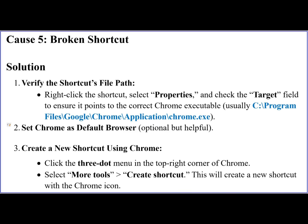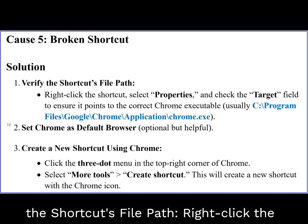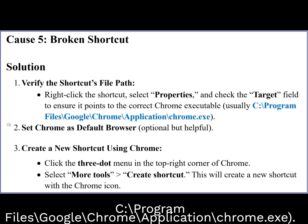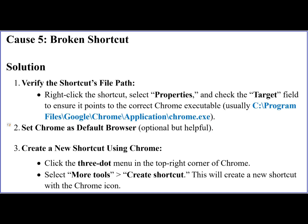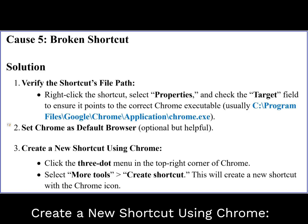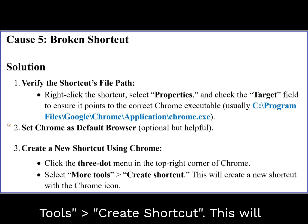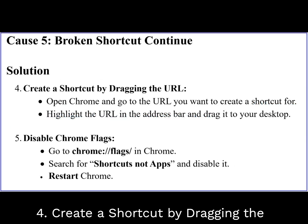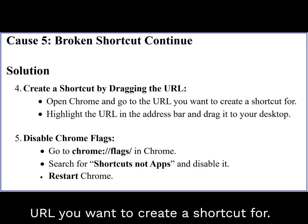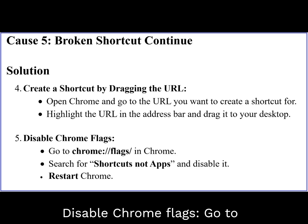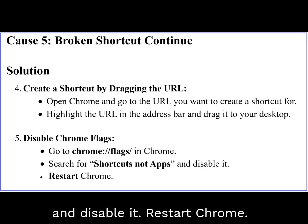Cause 5: Broken shortcut. Solution 1: Verify the shortcut's file path — right-click the shortcut, select Properties, and check the Target field to ensure it points to the correct Chrome executable, usually C:\Program Files\Google\Chrome\Application\chrome.exe. 2. Set Chrome as default browser (optional but helpful). 3. Create a new shortcut using Chrome: click the three-dot menu in the top-right corner of Chrome, select More Tools, then Create Shortcut — this will create a new shortcut with the Chrome icon. 4. Create a shortcut by dragging the URL: open Chrome, go to the URL you want, highlight it in the address bar and drag it to your desktop. 5. Disable Chrome Flags: go to chrome://flags, search for Shortcuts not apps, disable it, and restart Chrome.